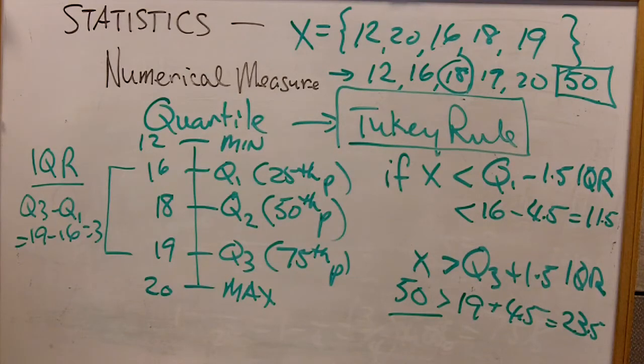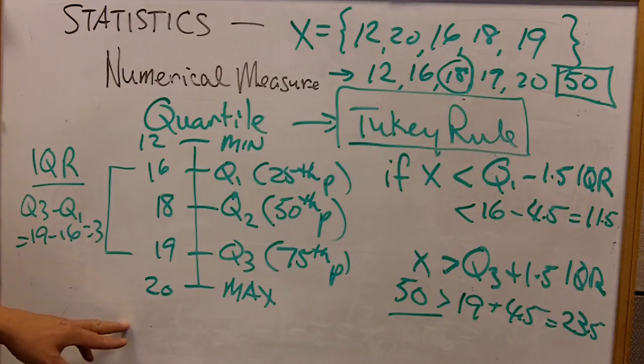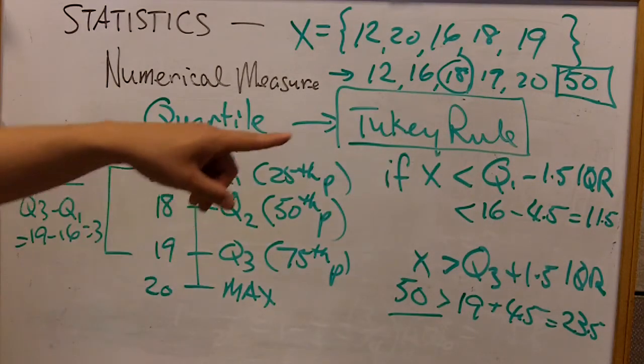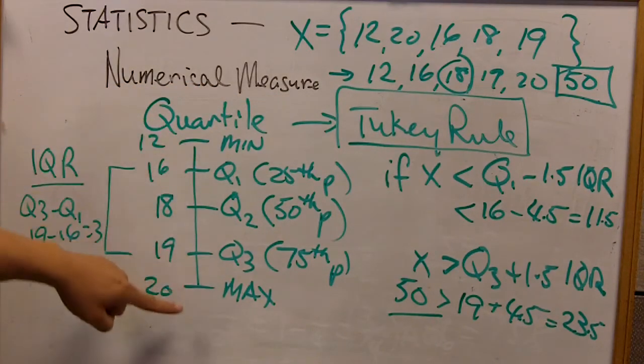That's pretty simple. And the nice thing about using the Tukey rule is it's not influenced by any extreme values to begin with. Q1 and IQR, as part of the rule, they're not influenced by the min and max.